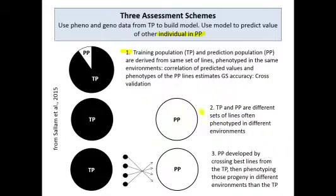In scheme number two, the training population and prediction populations are different sets of lines, often phenotyped in different environments. There could be different degrees of relationship between the training populations and the prediction populations depending on the study.